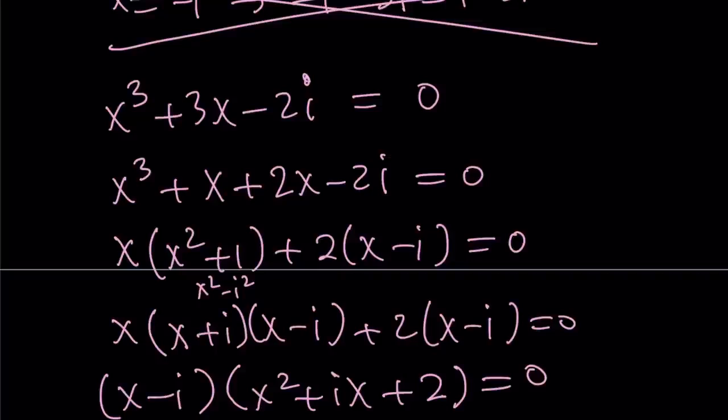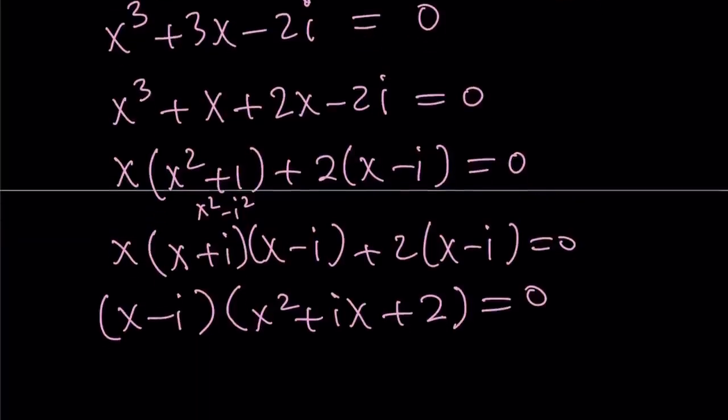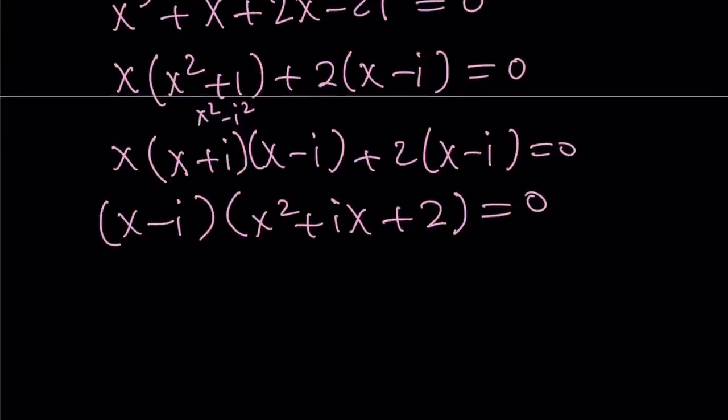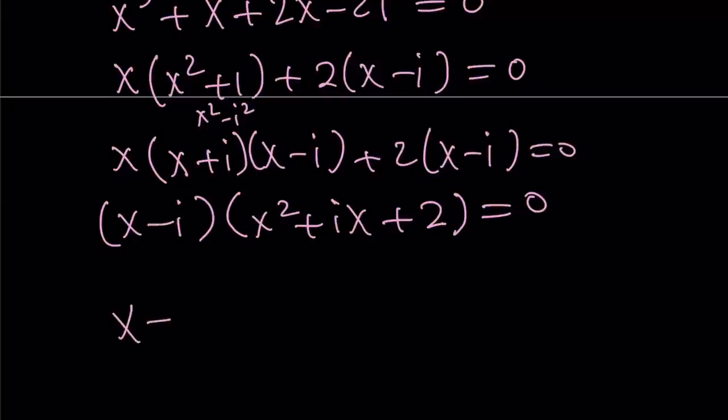Now, who said that sum of 2 squares cannot be factored? Well, not in the real world, but in the complex world, everything is possible. I can write this as (x+i)(x-i) because x² - i² is x² + 1.